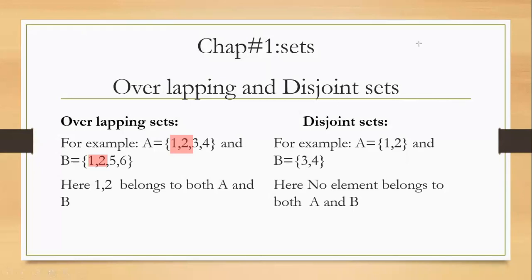Now, what about disjoint sets? For example, A contains elements 1, 2 and B contains elements 3, 4. Is there any common element in set A and set B? No, there isn't any common element. No element belongs to both sets. That means these sets are disjoint. Disjoint sets means sets having no common element.